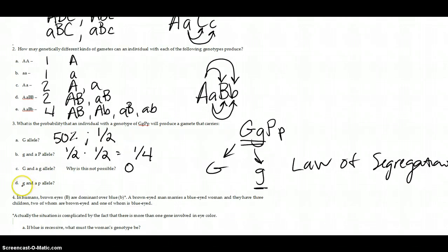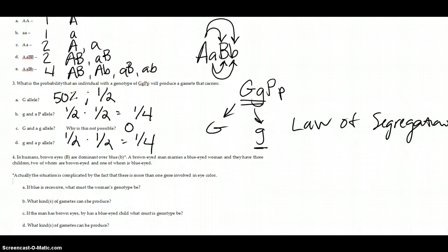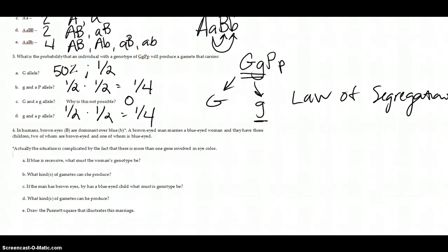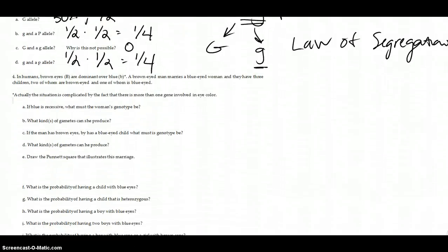For a gamete carrying little g and little p: the probability of little g is one half and the probability of little p is also one half, giving one fourth.